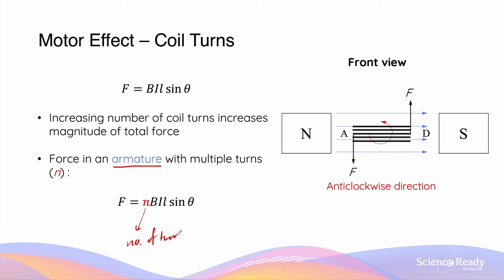We usually prefer more turns of coil in an armature so that the total force and the resultant torque is increased.